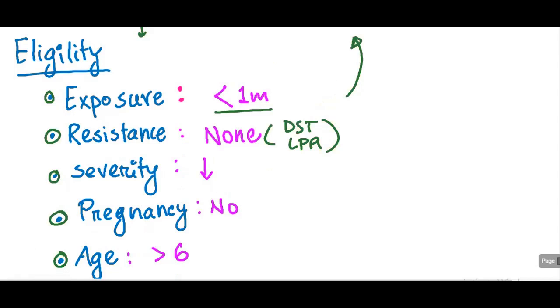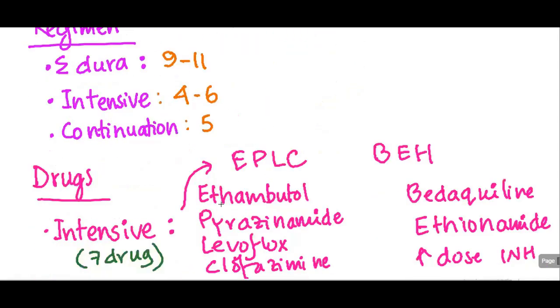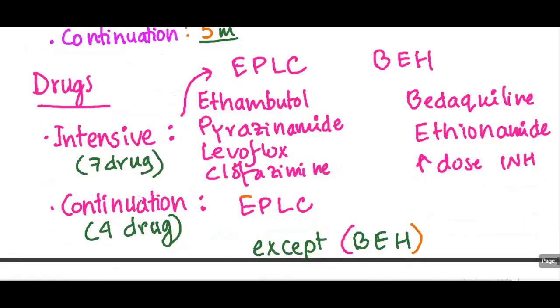What's the regimen? The total duration is nine to eleven months, and the intensive phase is four to six months, depending on the resistance or depending on the sputum smear results at the end of four months. If the sputum smear is positive at the end of four months, we can continue another two months. And the continuation phase is fixed at five months.